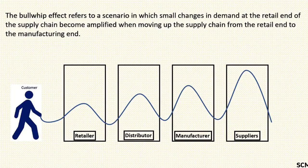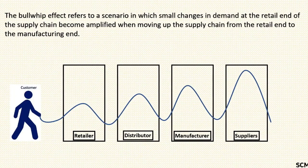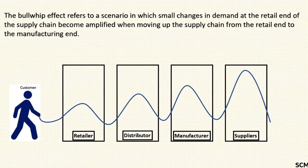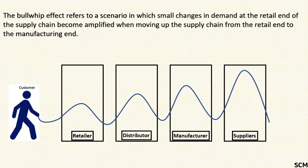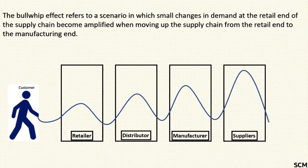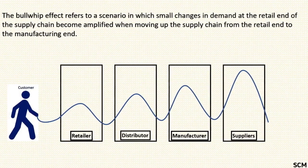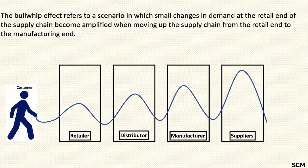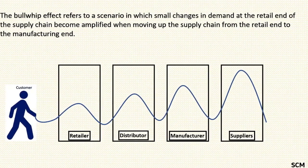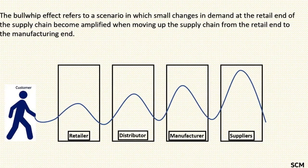The bullwhip effect refers to a scenario in which small changes in demand at the retail end of the supply chain become amplified when moving up the supply chain from the retail end to the manufacturing end.